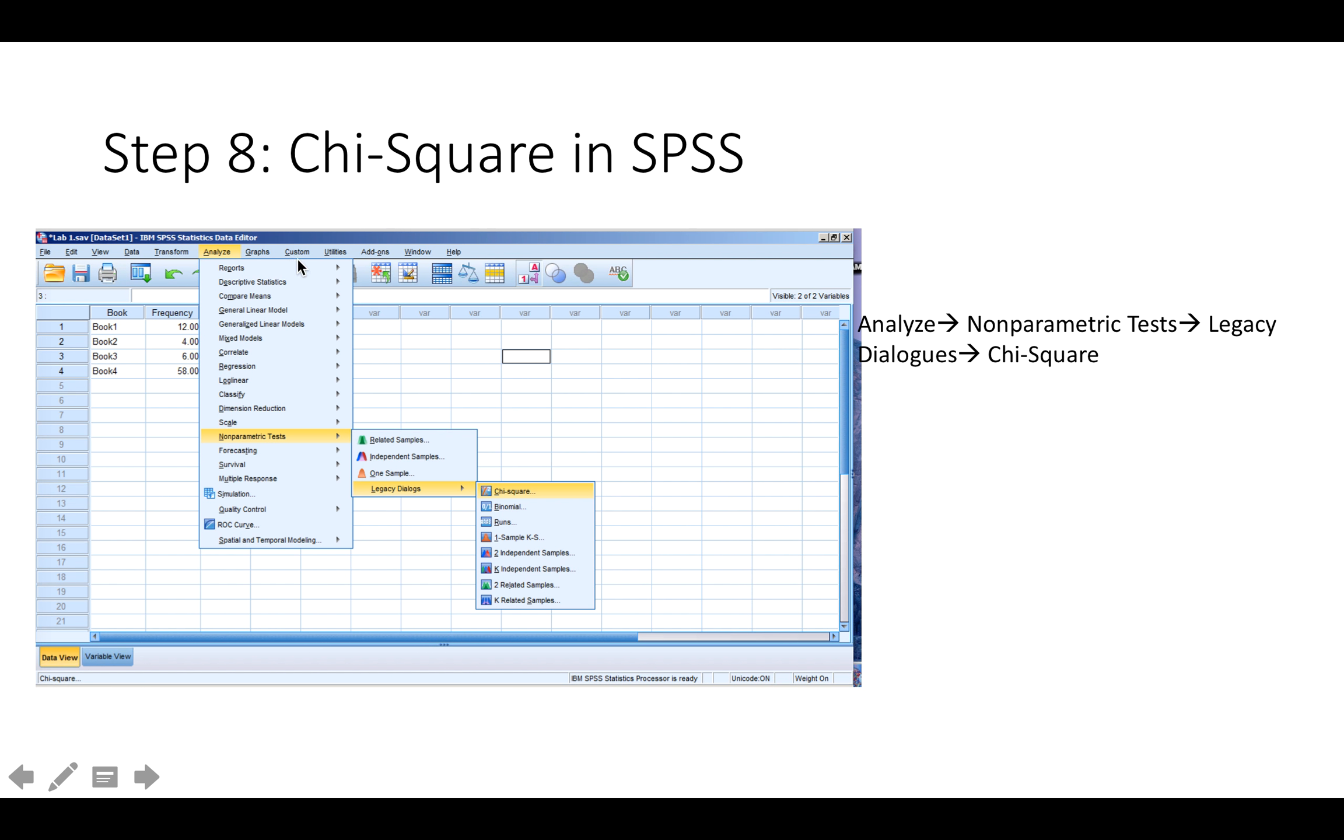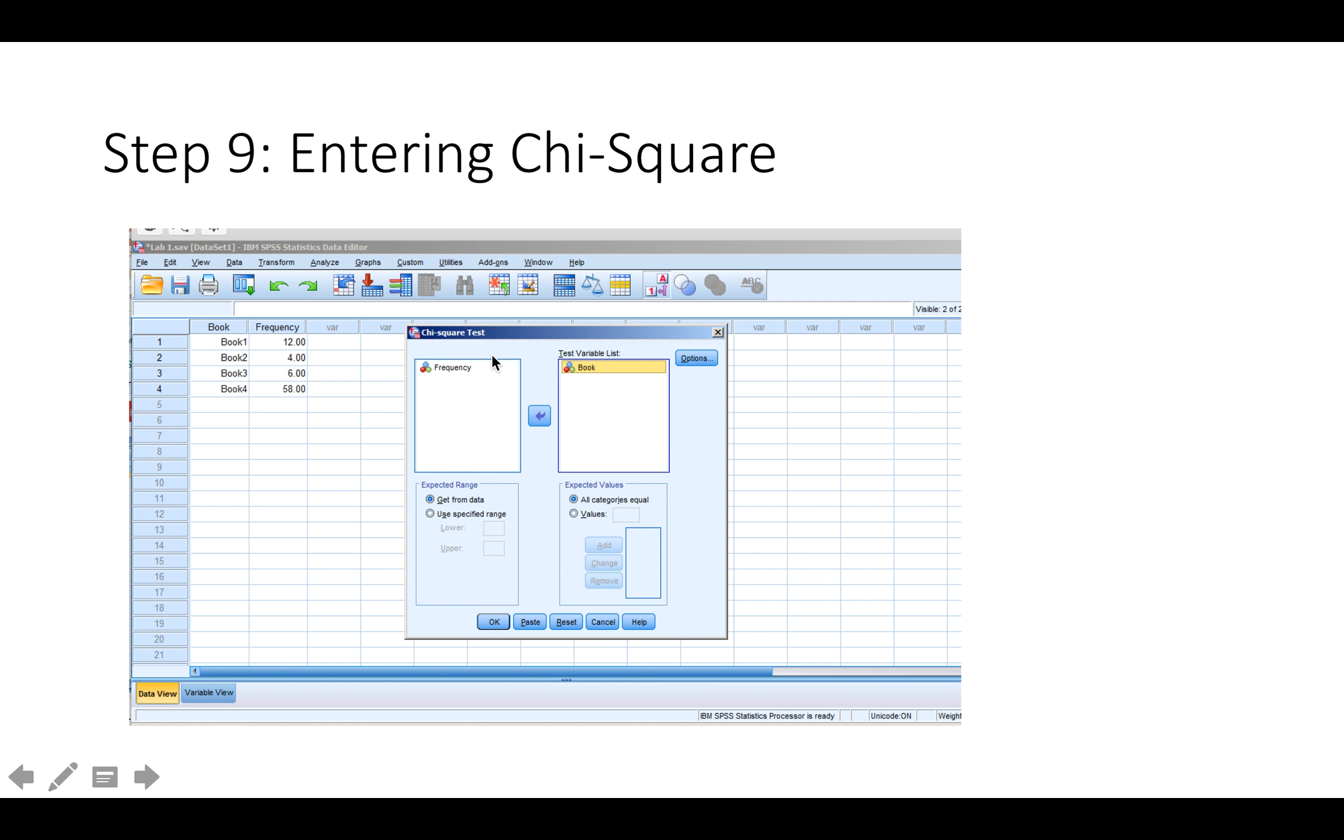Next we're going to run the chi-square. At the top, on the analyze tab, you're going to go down to non-parametric tests, legacy dialogues, and then chi-square. From the left column, you're going to add book to the test variables list.